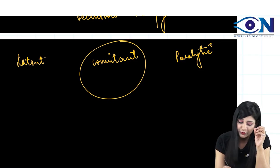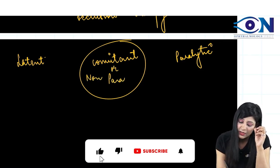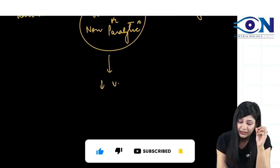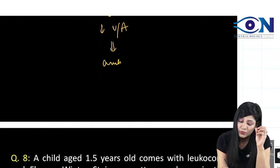It is this comitant variety of squint, which is non-paralytic, comitant or the non-paralytic variety of squint where we get the decreased visual acuity. And due to this, the patient will go into amblyopia.